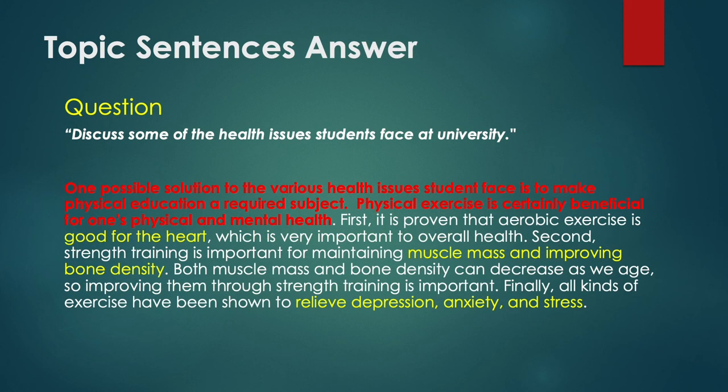Here's one possible answer: 'One possible solution to the various health issues students face is to make physical education a required subject. Physical exercise is certainly beneficial for one's physical and mental health.' This has two sentences and notice it mentions both physical and mental benefits. That's an example of an effective topic sentence for this paragraph.